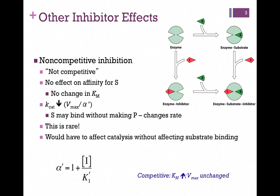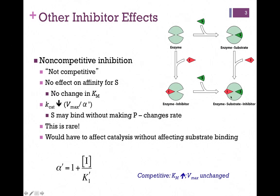Since non-competitive inhibition has no impact on substrate binding, it cannot alter the enzyme's affinity for substrate, and therefore there is no change in Km. However, even with substrate bound, if the inhibitor is present, we cannot make product, and so that lowers our Kcat or Vmax. Since it is a reversible inhibitor, if the inhibitor dissociates with the substrate bound, we can make product — we just can't make as much in the same amount of time, and that lowers our Vmax.